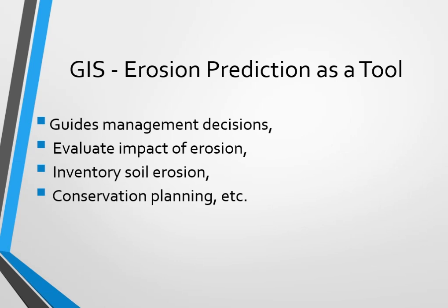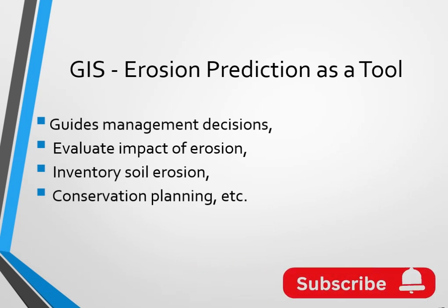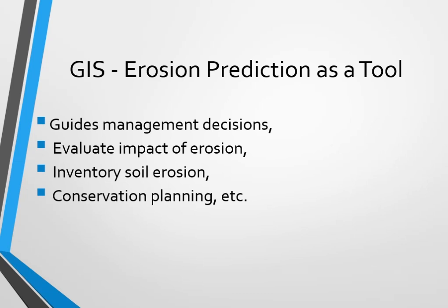It is very important to locate erosion hotspots. We can use GIS as an inventory for soil erosion. In addition, it helps us for conservation planning. After conducting research, you can proceed with conservation planning measures — for instance, providing different soil and water conservation practices in the watershed. So, GIS is very helpful in order to support this conservation planning.